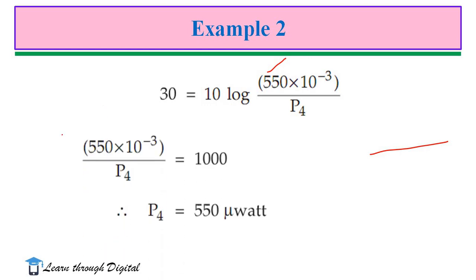So, P4 is 550μW. Power in auxiliary arm is 550μW.